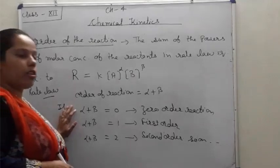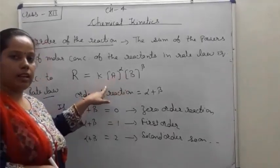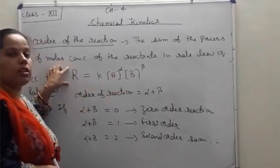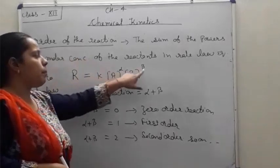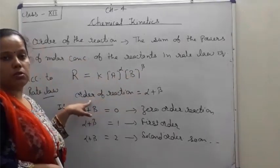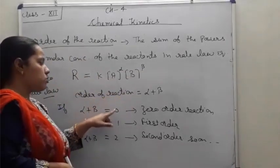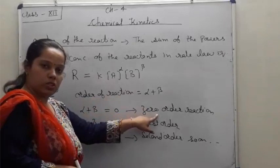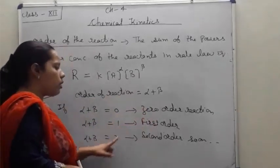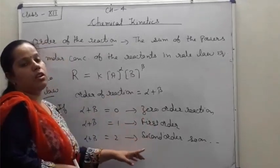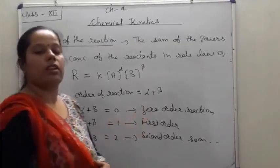So, order is the sum of the powers of the molar concentration of the reactants in the rate law equation. If the sum is zero — zero order; if one — first order; if two — second order; if three — third order, and so on. Now some examples of zero, first, and second order reactions.